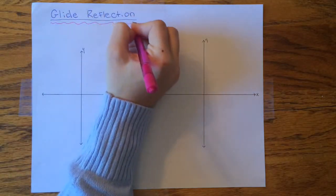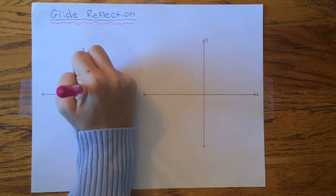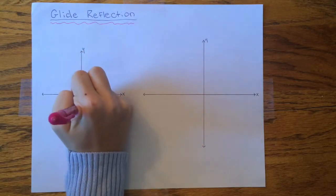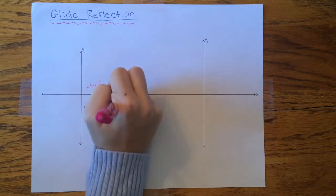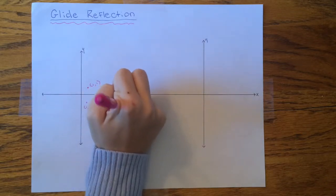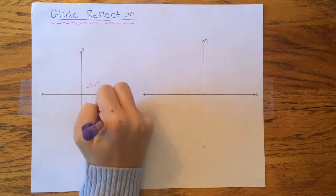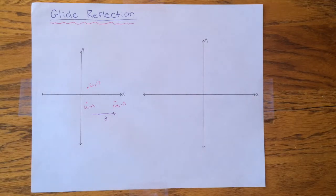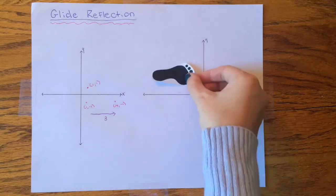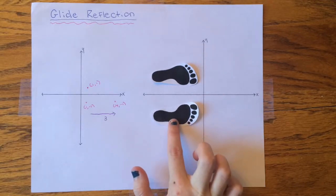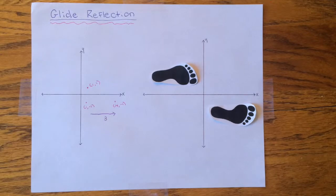The final operator is glide reflection — a combination of horizontal reflection and translation. First, the original image is horizontally reflected. Then, this new image is translated by a specified translation distance. For example, if the translation distance was 3, the point would be glide reflected. We will demonstrate this using a translation distance of 3 units: the original image is first horizontally reflected, and then this new image is translated a distance of 3 units.